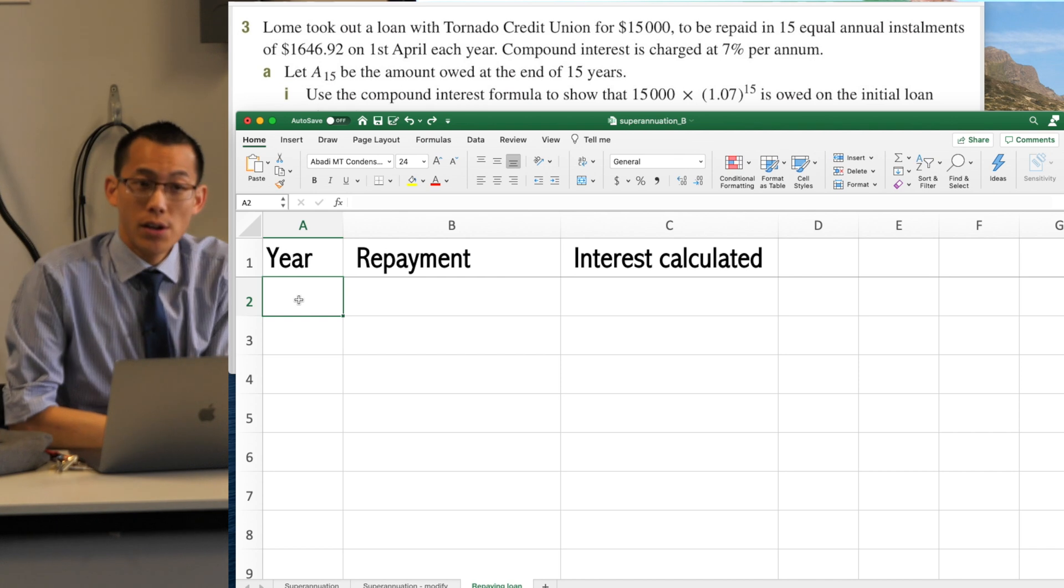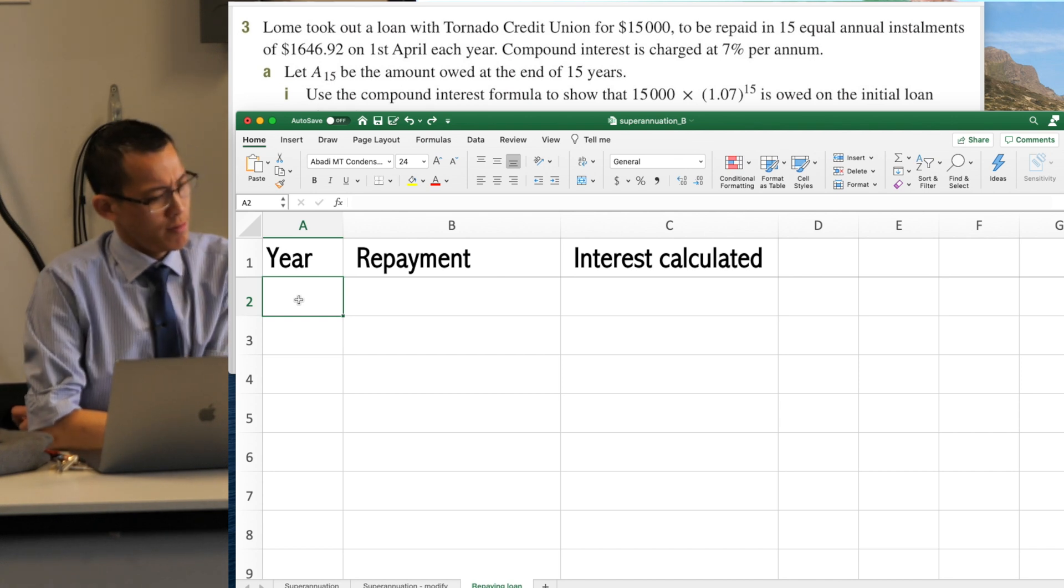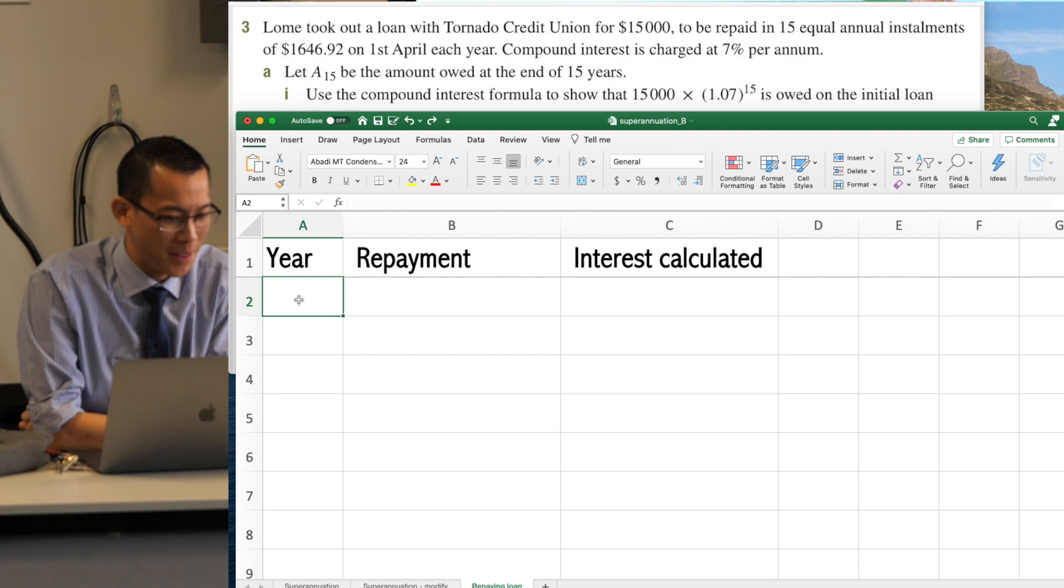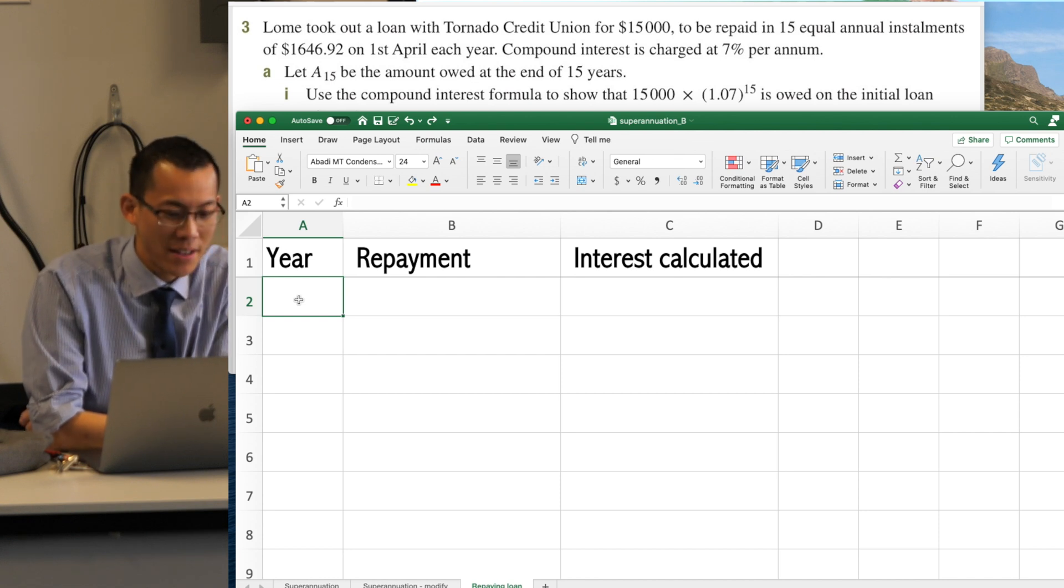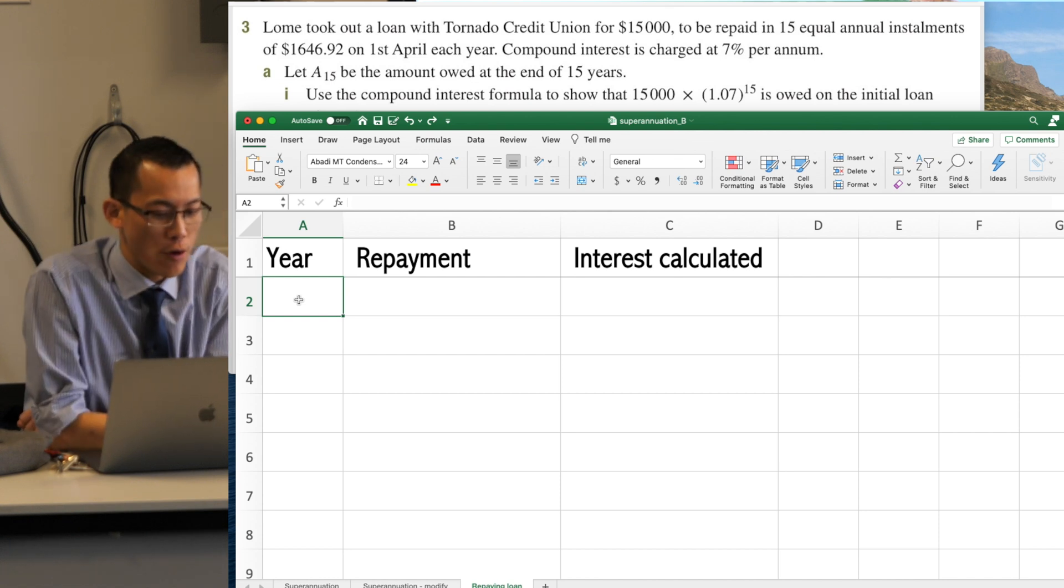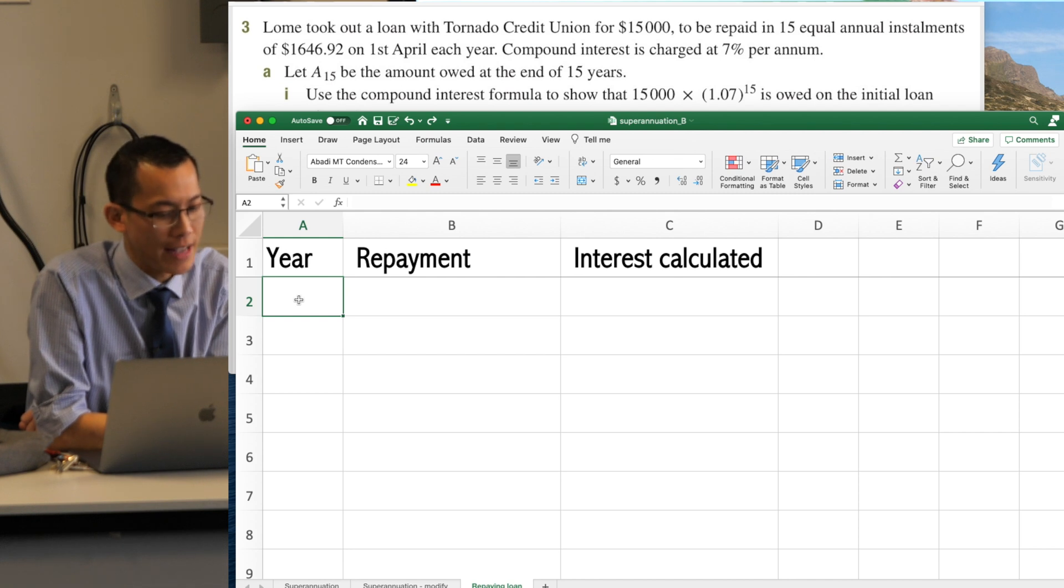Up there in the top left. This person, Loam, took out a loan with some bizarrely named credit union. It's $15,000 to be repaid in 15 equal annual installments. It gives you the amount, the size of each installment.